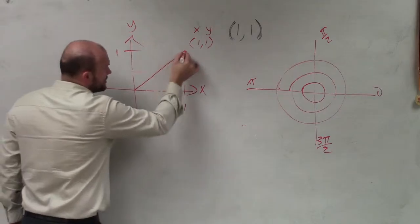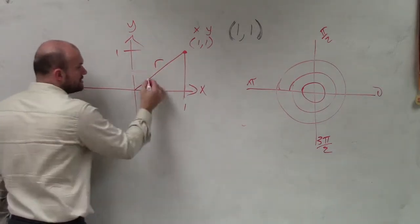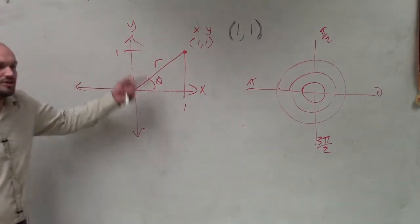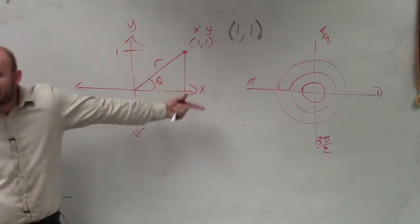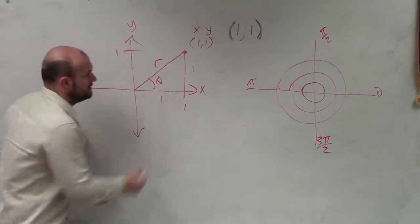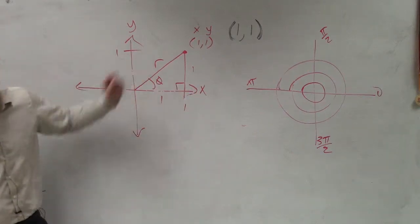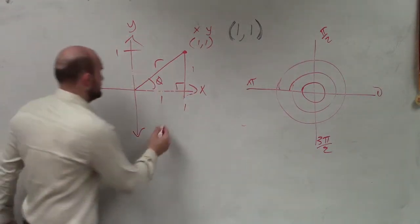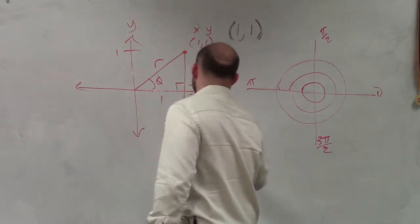We are concerned about knowing what r is and what theta. r just represents the radius. It's also the hypotenuse of this triangle. So knowing that this is 1 and that's 1, and that this is a right triangle, can we figure out what r is? Of course we can. 1 squared plus 1 squared equals r squared.